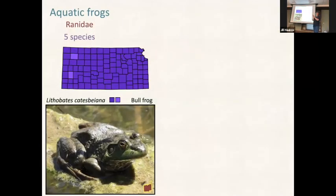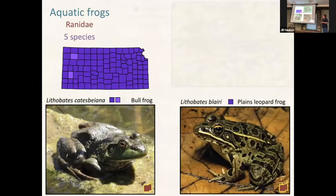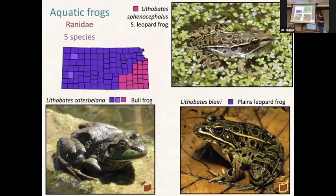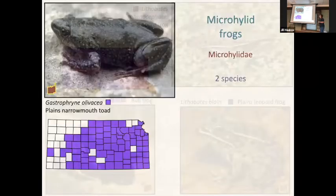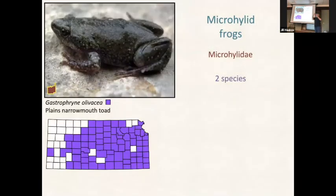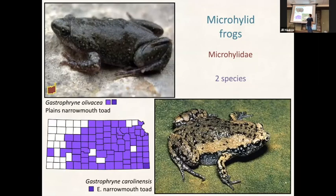We have five species of mostly aquatic frogs - the bullfrog you're probably familiar with, and leopard frogs. We have plains and southern leopard frogs. Microhylid frogs are tiny flat frogs that live out in open prairie under rocks - not around water most of the time. Don't be fooled by the name - they have 'toad' in their name but they're actually frogs, and they mostly eat ants. They're only in the really wet Cherokee County area.